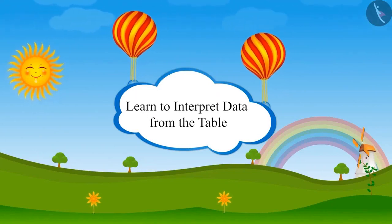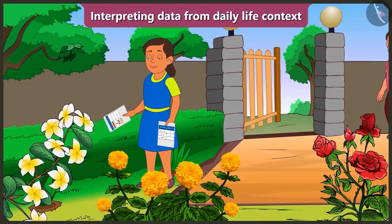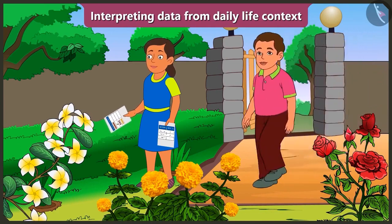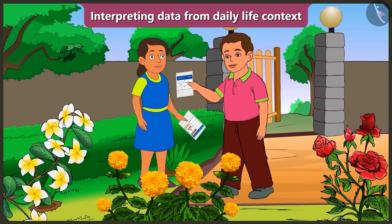Data from daily life context. Hey Bubbly, what are you doing in the garden? Bunty, Mummy has prepared this table and given it to me. There are different flowers in the garden. I am counting the blossomed flowers to find out how many flowers have blossomed.